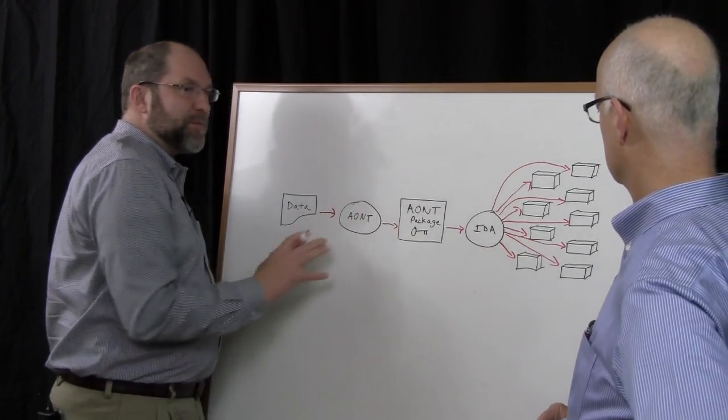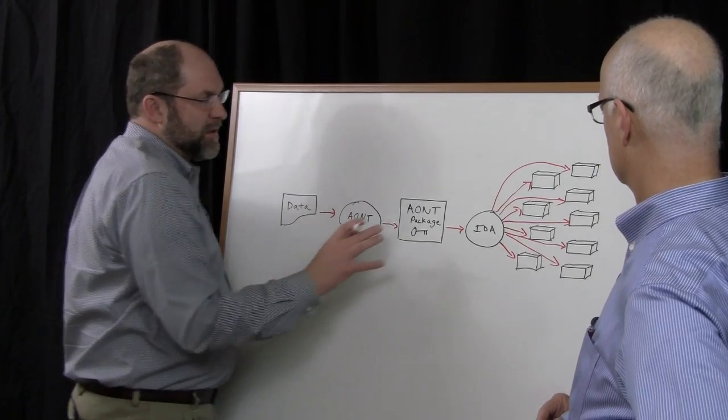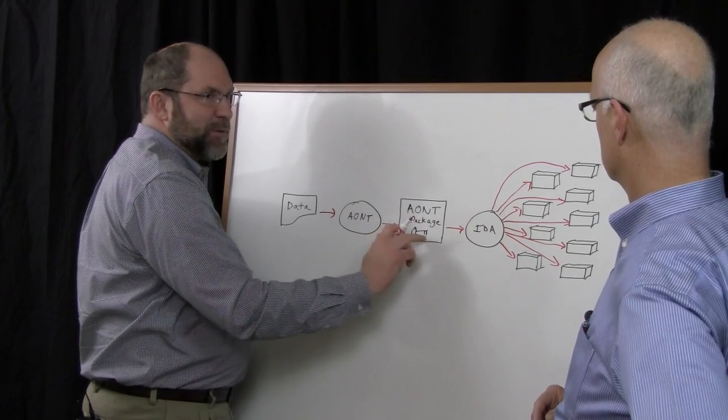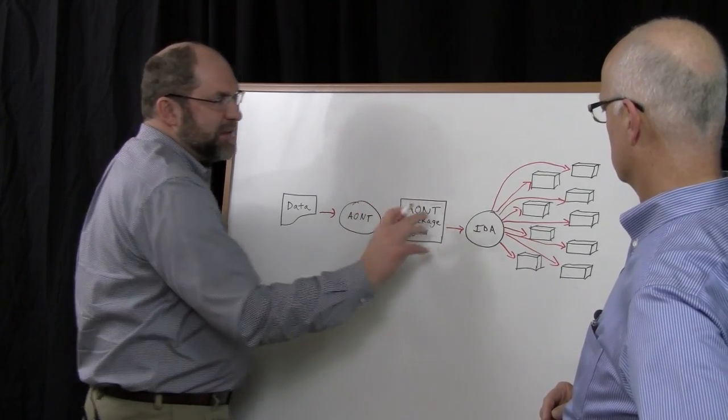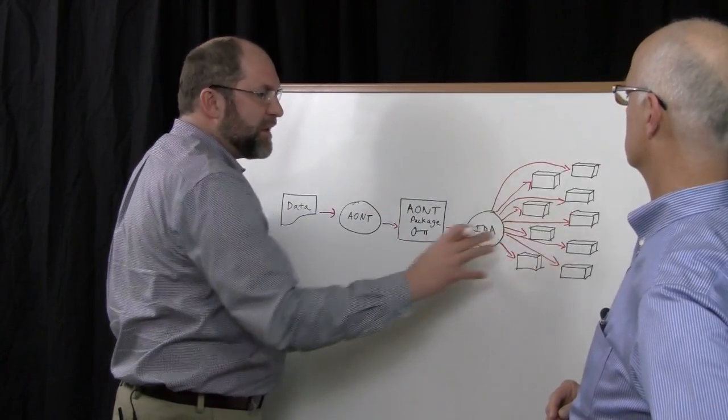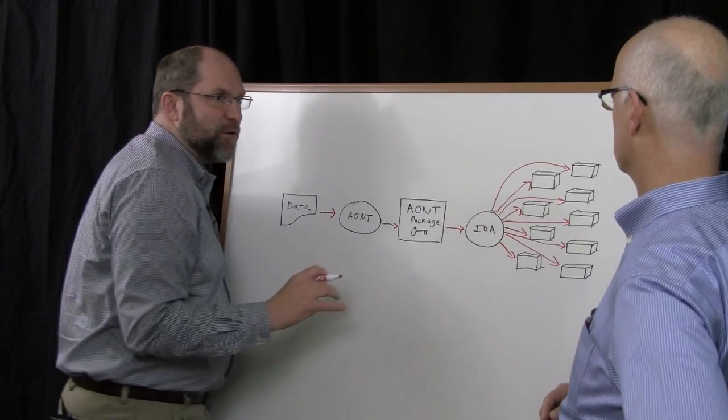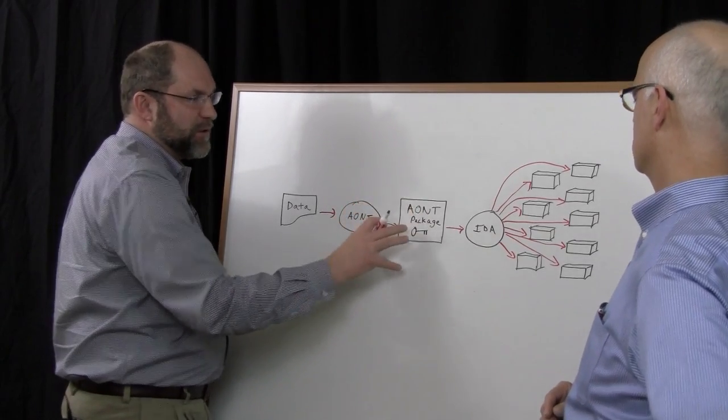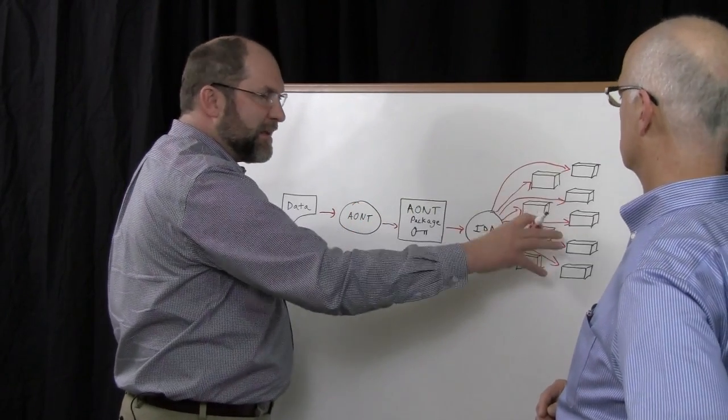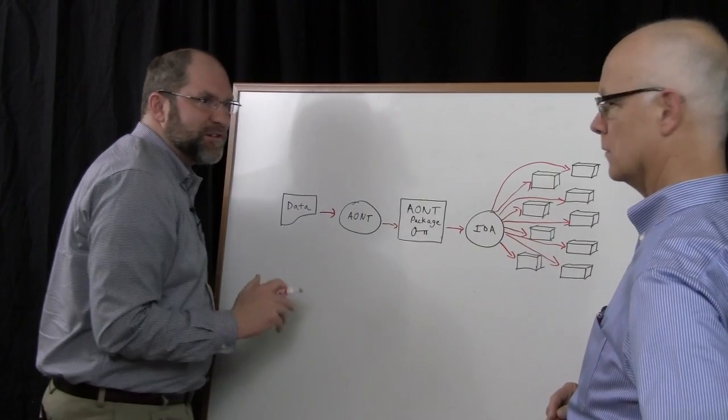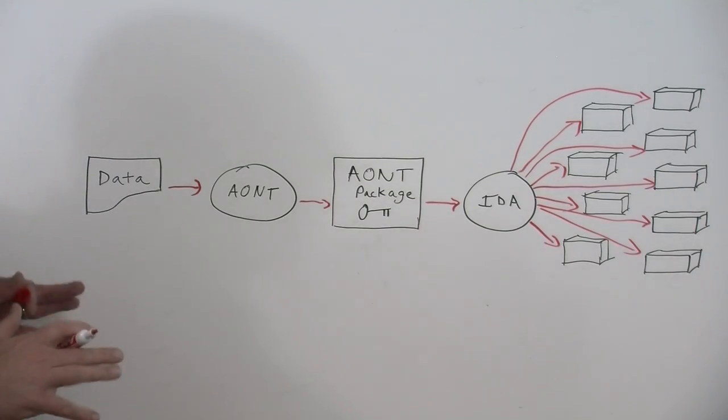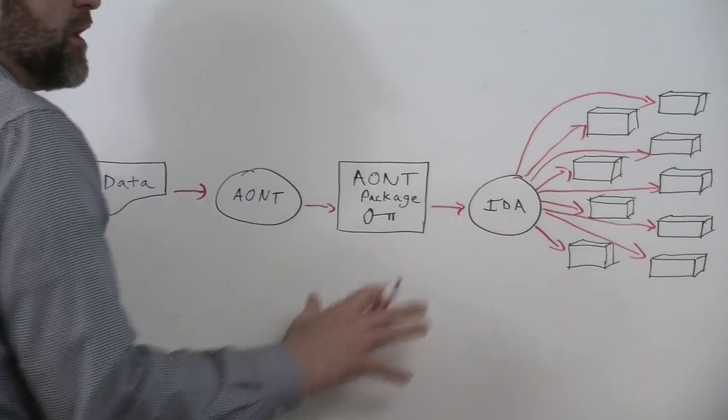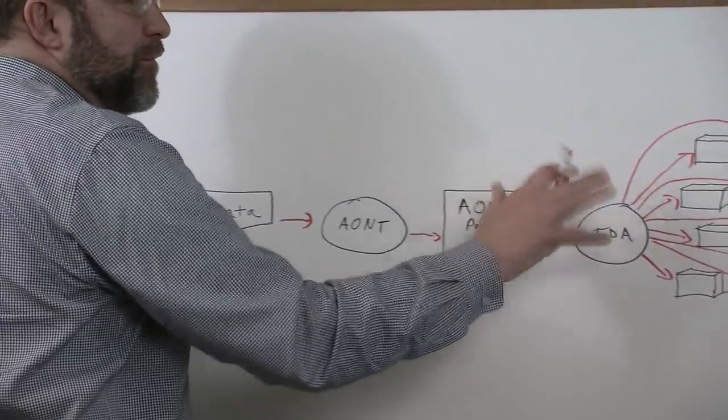Now, the real benefit from a security point of view is because you have to have all the data and the encryption key to reverse the encryption, you can see that in the form that this gets stored, there is no place on any single storage node where you have the entirety of the data that would allow you to reverse the encryption. There's no single place where the key can be found. In fact, the data stored on these different storage nodes is completely indistinguishable from random bits. So from a data at rest point of view, the data is now in a highly, highly secure form.